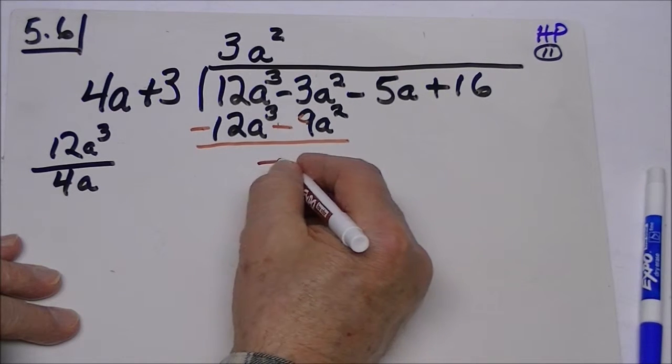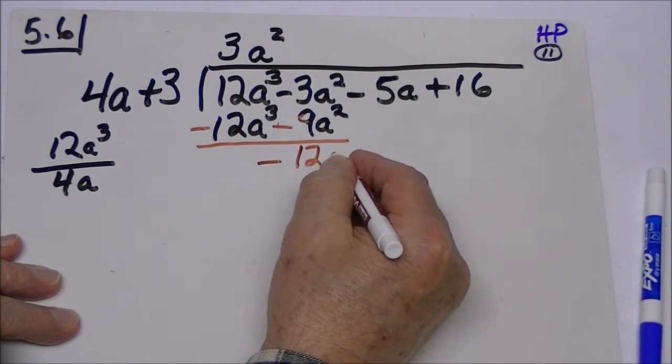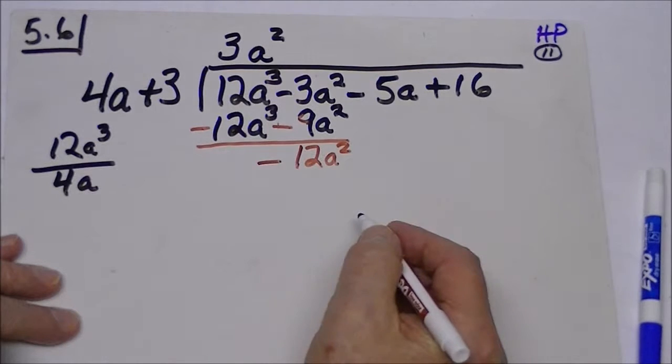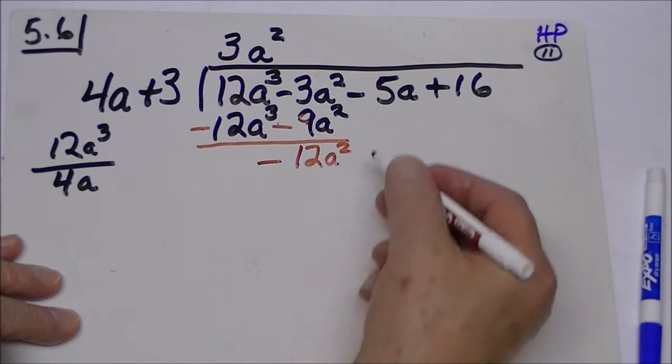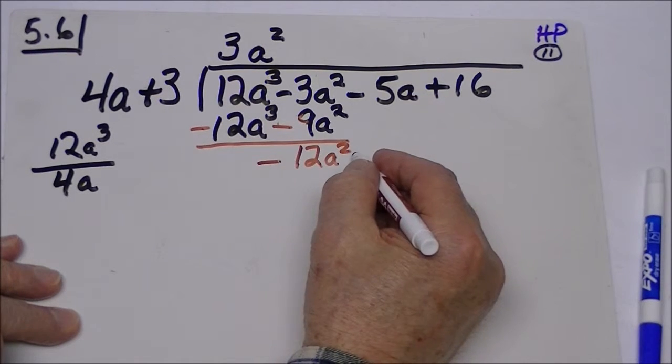So here these cancel out, and this leaves me with a negative 12 a squared, and the rule is we bring down our next term.